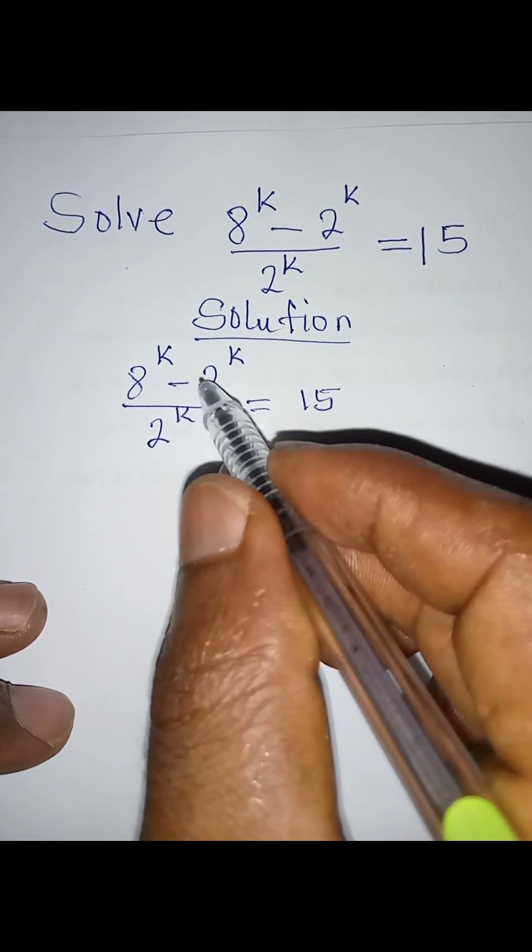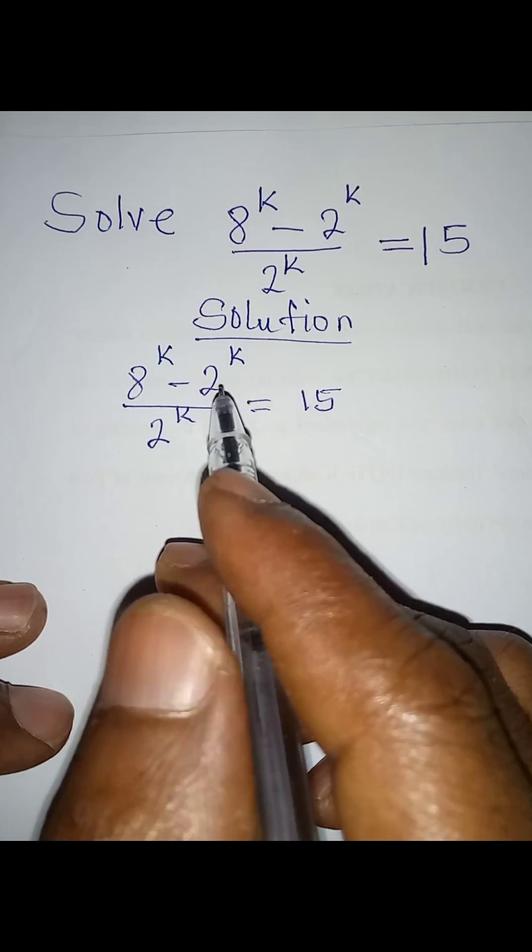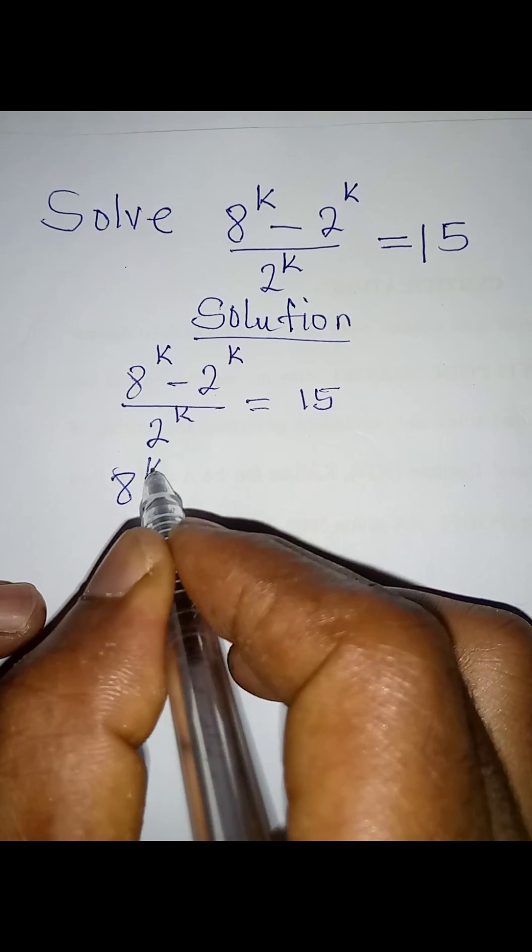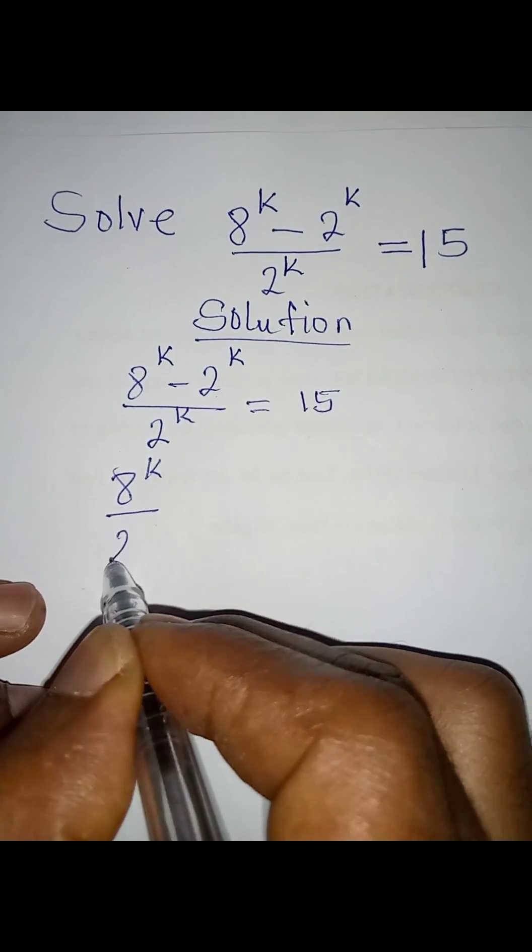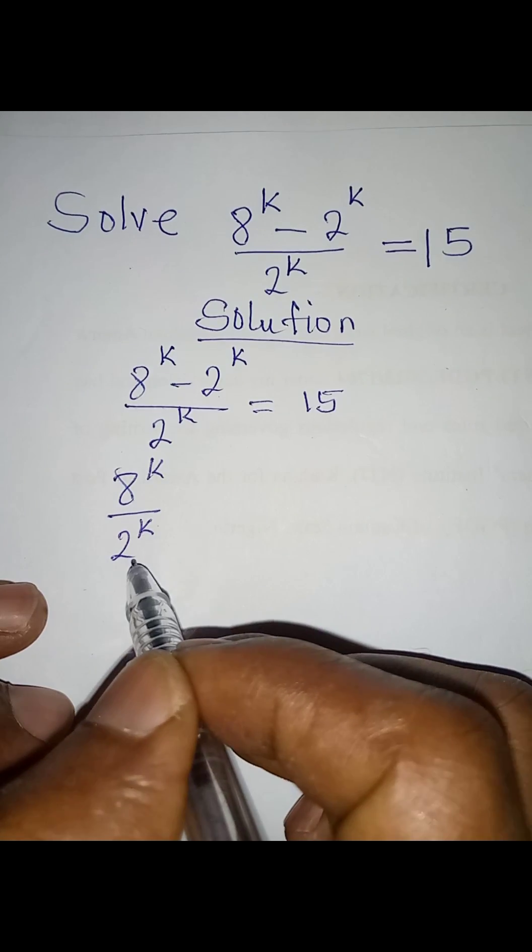So what we are going to do is try to split it. We can have this as 8 to the power k all over 2 to the power k.